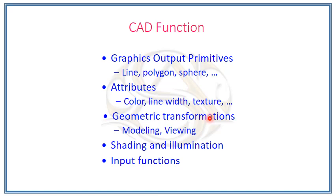The CAD functions include: graphics output primitives (line, polygon, sphere, etc. — the geometrical shapes), attributes (which give the color of the object, line width, texture, etc.), geometric transformations, modeling and viewing (covered in previous videos), shading and illumination, and input functions. The input function defines how a file is converted from one software to another software.